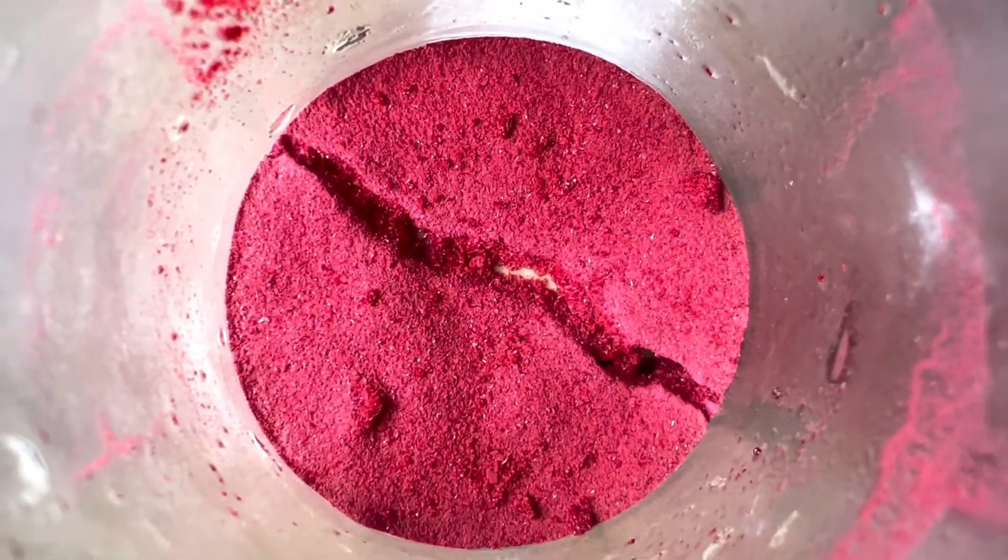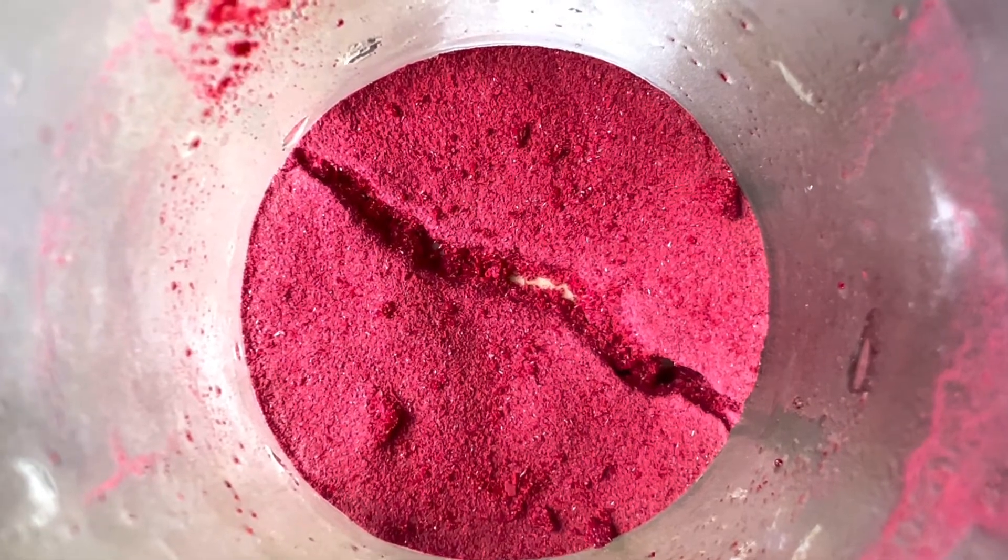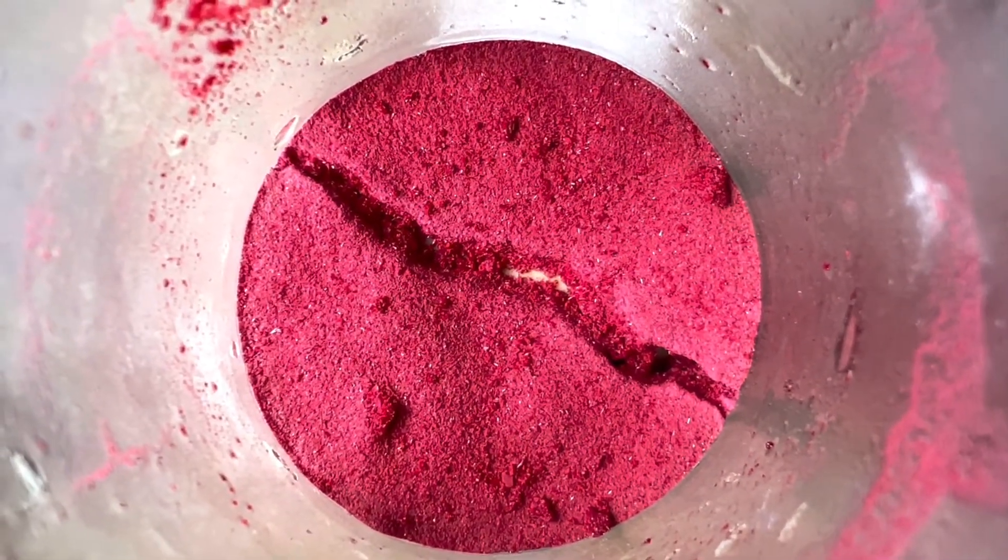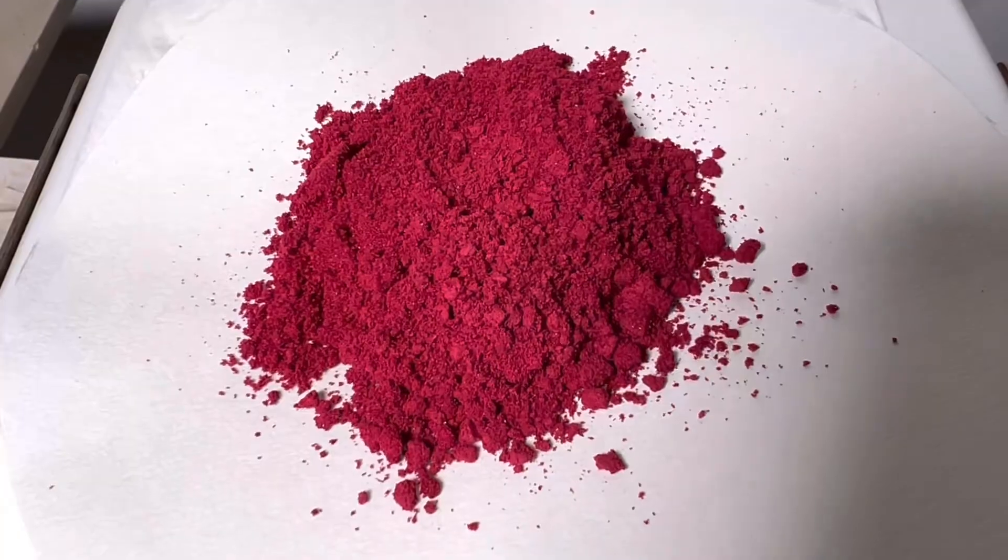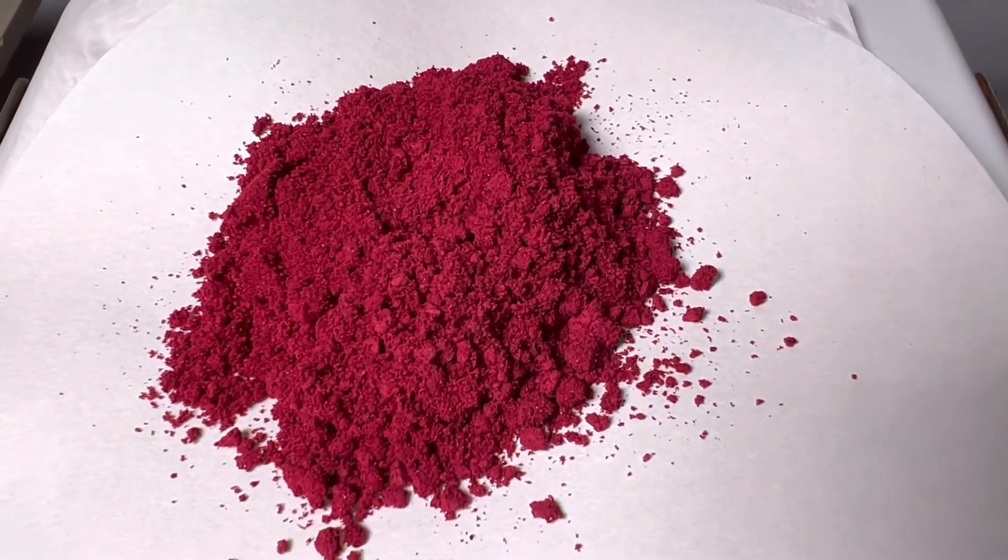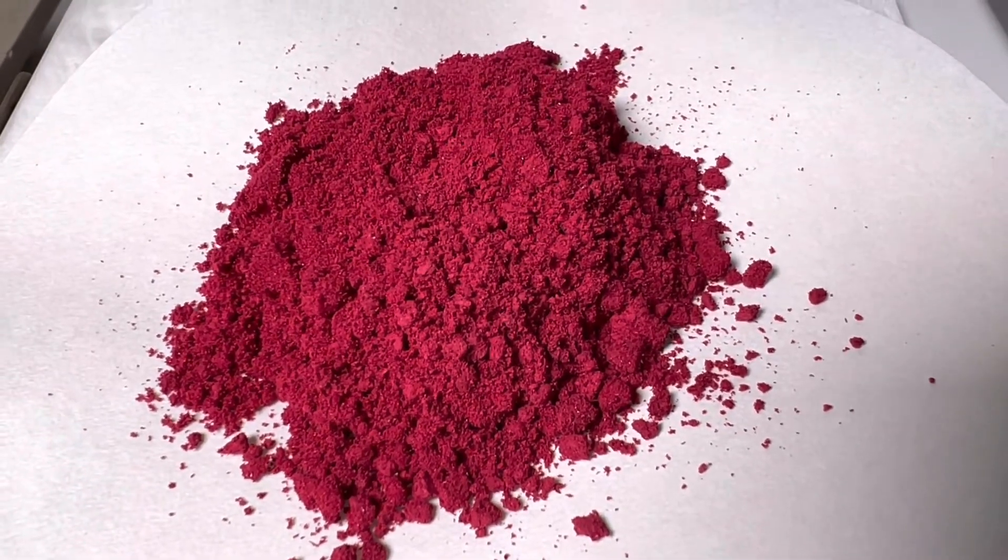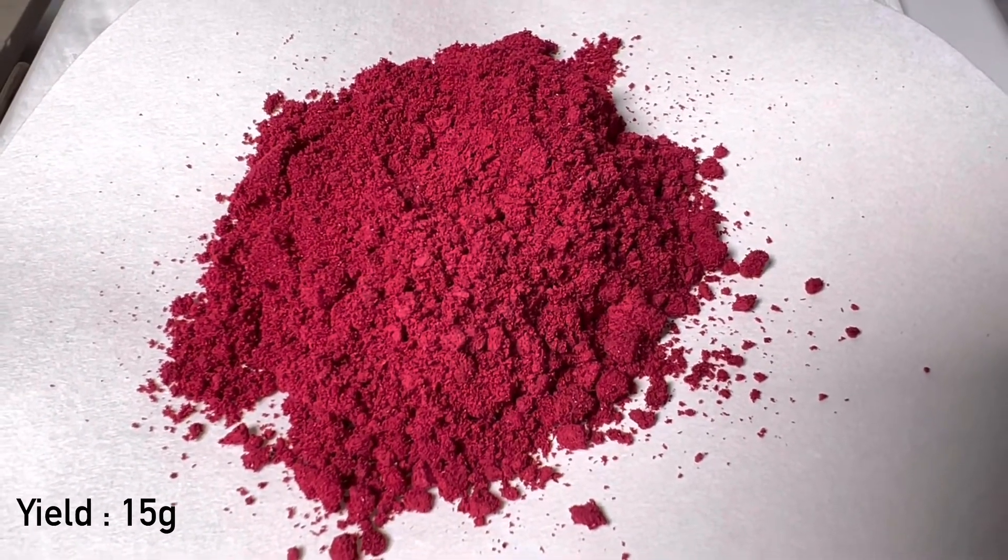The purple color of sodium violurate is now evident. For complete drying, the product was placed in a vacuum desiccator with anhydrous calcium chloride overnight. This is the final product taken out of the vacuum desiccator. The final yield that we got was 15 grams.